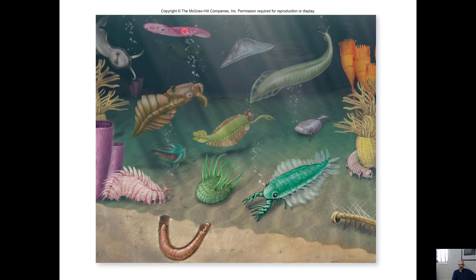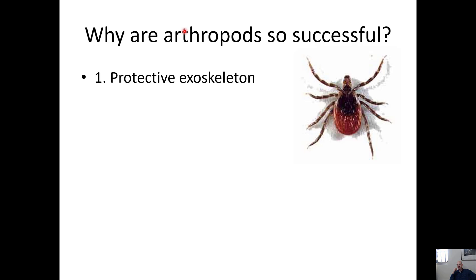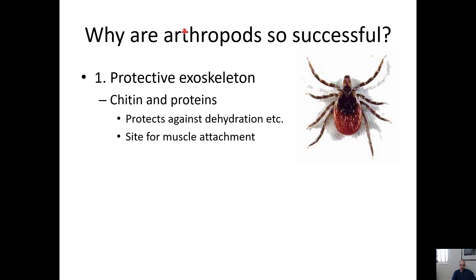Arthropods are super successful, and one reason is their exoskeleton — a skeleton on the outside of their body that muscles connect to. It's protective and made of chitin and proteins. We've seen chitin before in the cell walls of fungi. The exoskeleton is waterproof, preventing them from drying out. They evolved this in the ocean, but already having waterproof skin and legs may have made coming onto land easier.